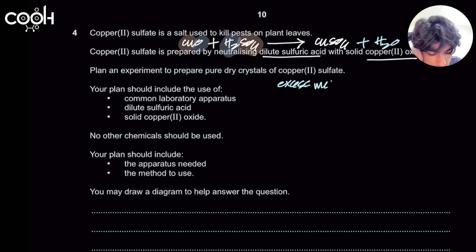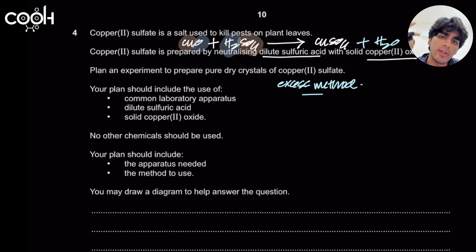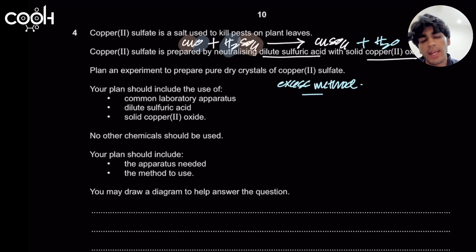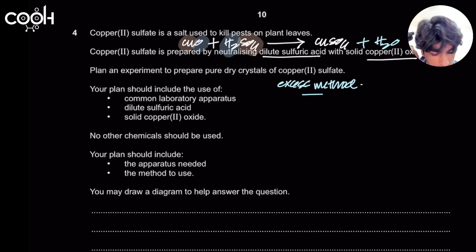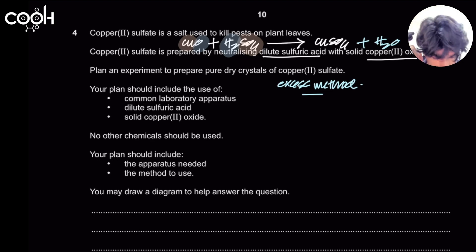There are three types of salt preparations: soluble salts of group 1, soluble salts other than group 1 and ammonium, and precipitation reactions for preparing insoluble salts. Since copper sulfate is soluble, you need to know your solubility rules.